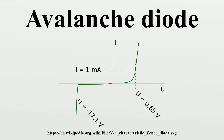RF noise generation: Avalanche diodes generate radio frequency noise. They are commonly used as noise sources in radio equipment and hardware random number generators. For instance, they are often used as a source of RF for antenna analyzers or bridges. Avalanche diodes can also be used as white noise generators.